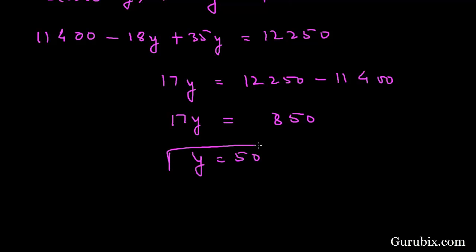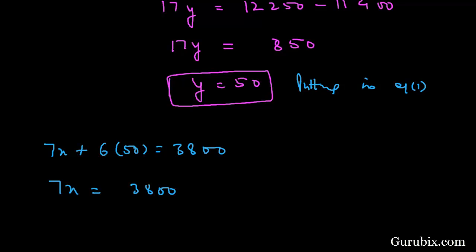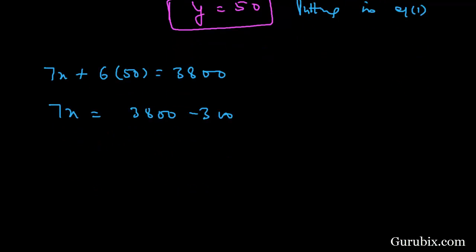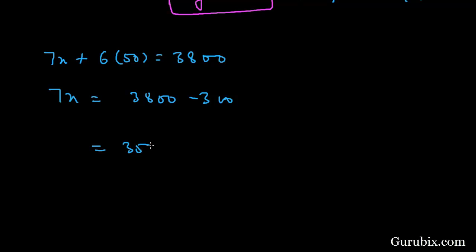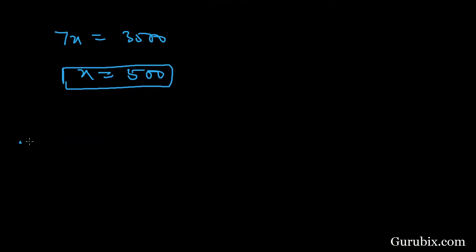Now we substitute Y equals 50 into equation number one to get the value of X. Seven X plus six times 50 equals 3800, so seven X equals 3500, which gives X equals 500.